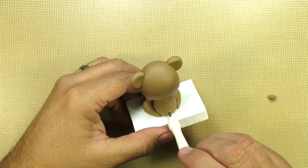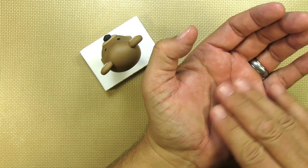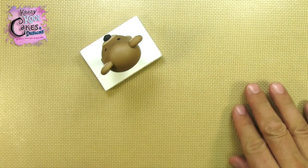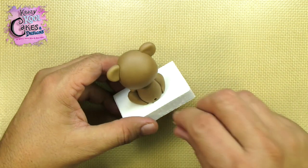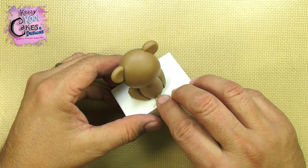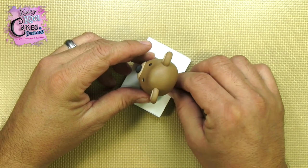To finish off our bear, all we need is a cute little tail. Just roll a tiny little ball into a teardrop shape, and then add a little bit of glue in the hole and in it goes. Just like that. Man, this little guy was sure fun to make.